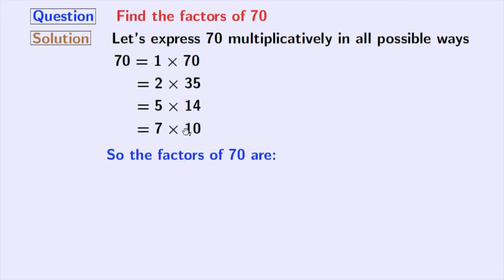So, here are the factors of 70 which are 1, 2, 5, 7, 10, 14, 35, and 70.